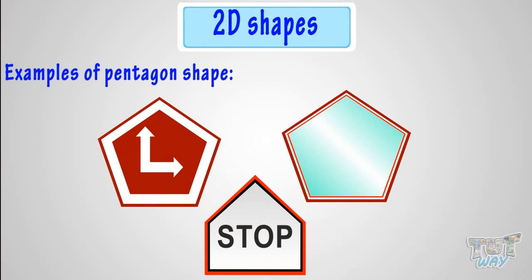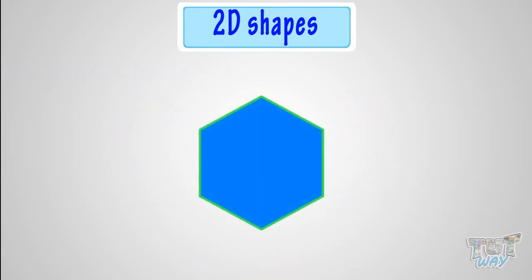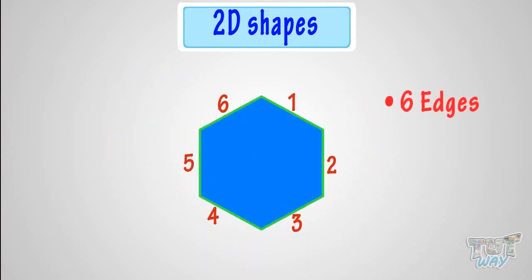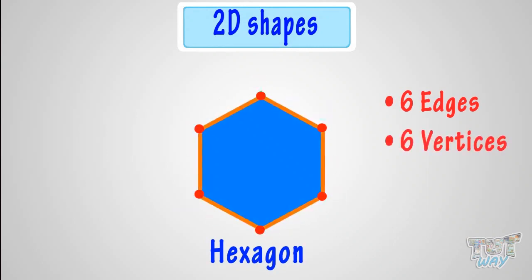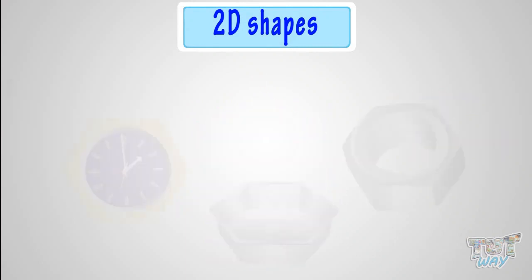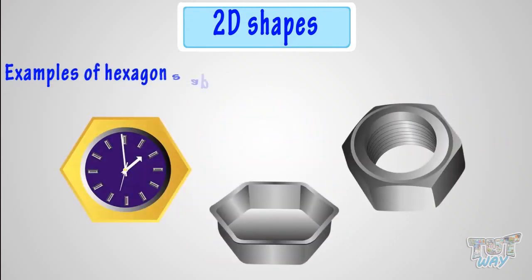This is a polygon that has six straight sides, and is called a hexagon. It has six vertices and six edges. These are some of the hexagon-shaped things.